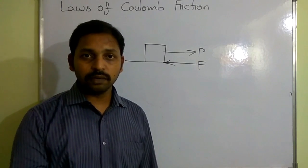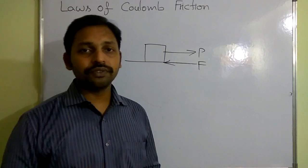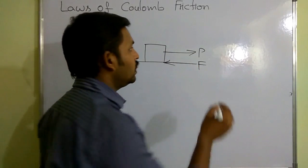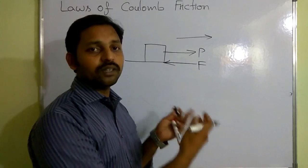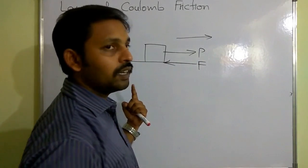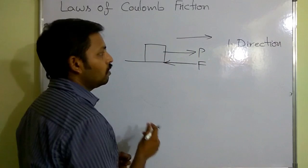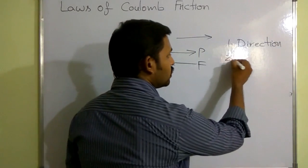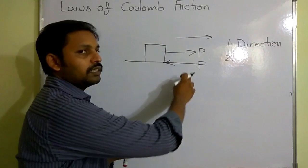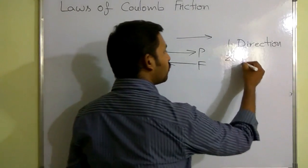Let's see the laws of Coulomb friction, which are nothing but dry friction. The first law is about the direction of friction — the direction of frictional force is always opposite to the direction of motion. If this is the applied force P, then we check in which direction the body has a tendency to move, and in the opposite direction we have the frictional force. The second law is about when the body is under the state of rest — the applied force is equal to the frictional force. When we apply sigma Fx equal to zero, the applied force P is equal to frictional force.